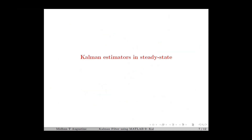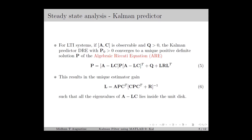Next we move on to the steady state analysis of the Kalman estimators, starting with the Kalman predictor. For LTI systems, if the pair (A, C) is observable and the variance matrix Q is positive definite, the Kalman predictor DRE with initial matrix P0 converges to a unique positive definite solution P of the algebraic Riccati equation (ARE) as given in equation 5. Moreover, this results in a unique estimator gain L as given in equation 6, such that all the eigenvalues of A minus LC lie inside the unit disk — meaning all eigenvalues of A minus LC have magnitude less than 1, which ensures stability.